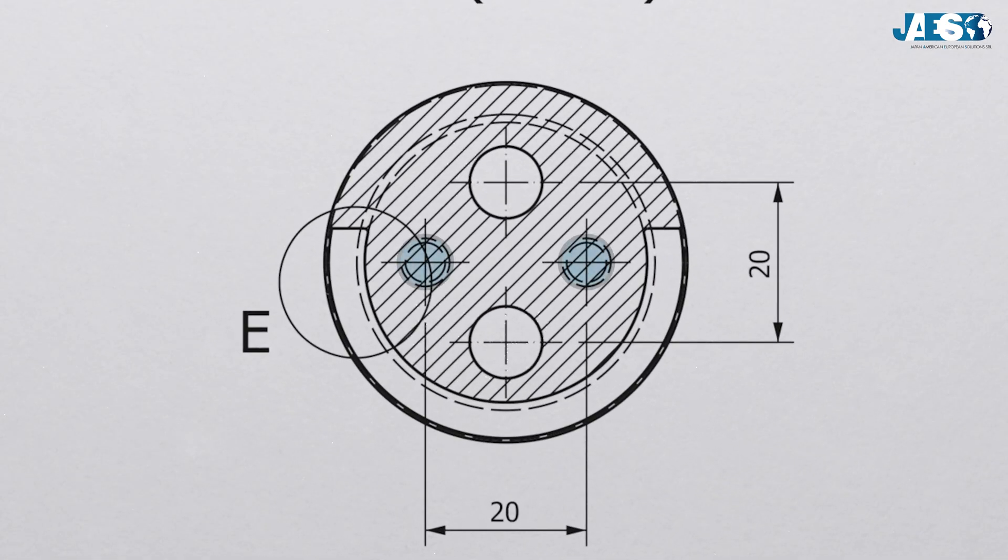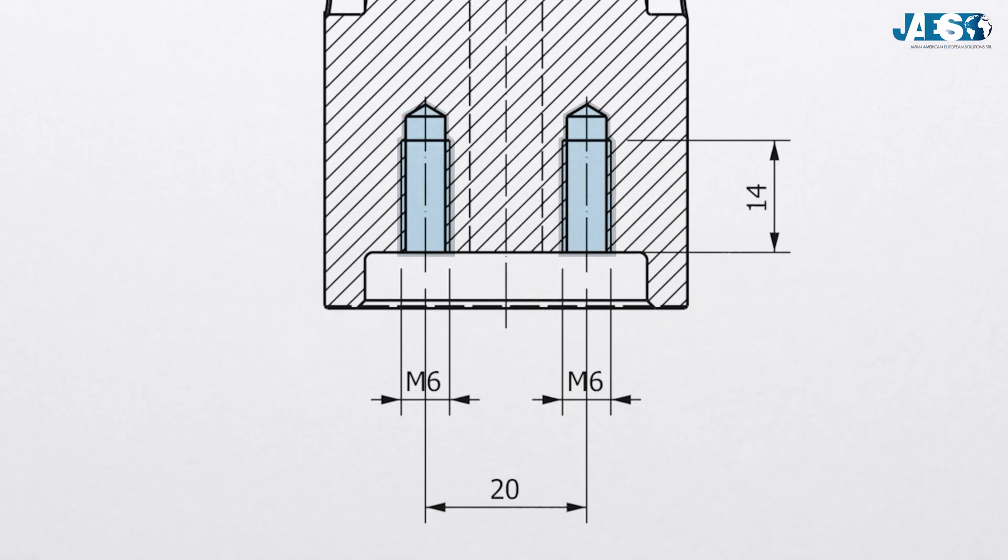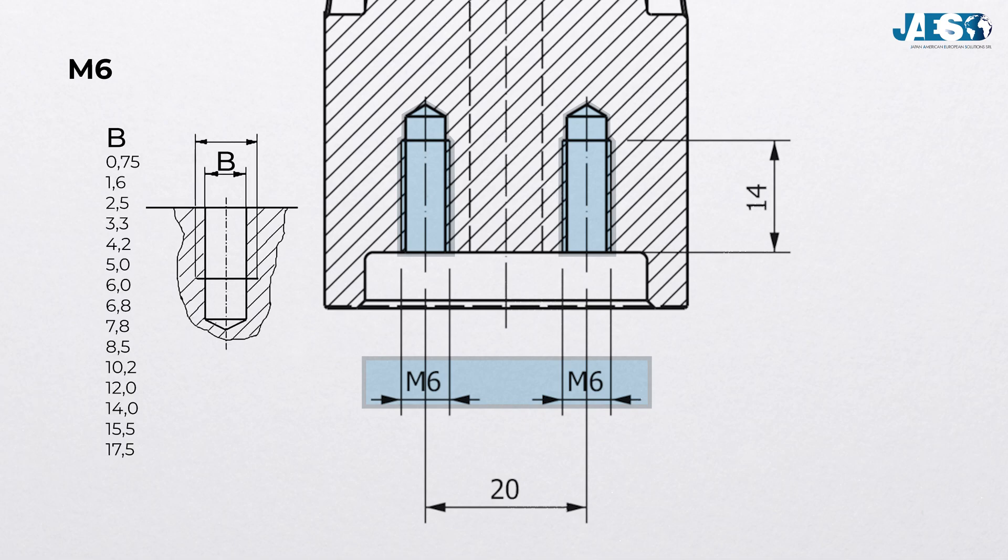Threaded holes, on the other hand, are represented as two concentric circles representing the root and crest of the thread. Usually, threaded holes are defined according to the ISO standard, which consists of an abbreviation. In this case, M6, which specifies the diameter of the hole to be made and the diameter of the thread to be made inside it.